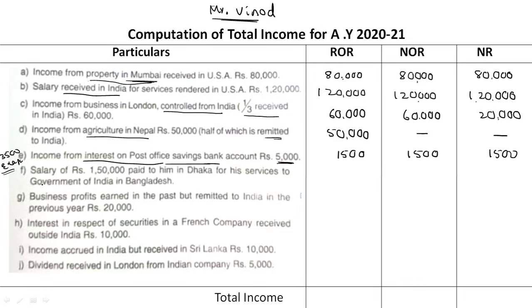Point F: Salary of Rs. 1,50,000 paid in Dhaka for services to the Government of India in Bangladesh. Salary received in Dhaka, but services are for the Government of India. Rs. 1,50,000 is taxable in all cases — ROR, NOR, and non-resident.